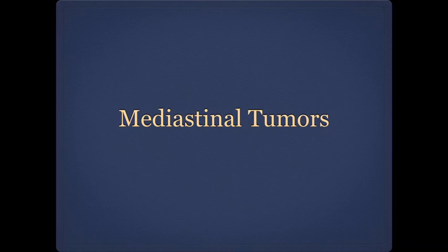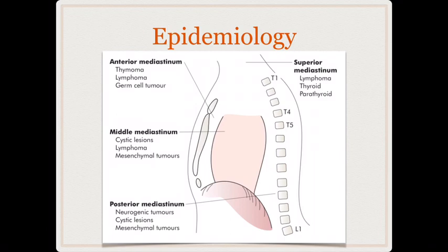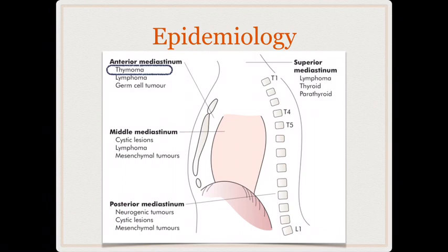Next we move on to mediastinal tumors, which are fairly uncommon but have a propensity to appear in large numbers in your MCQs. Common MCQs ask which is the commonest tumor in each mediastinum. The anterior mediastinum contains mainly the thymus and lymph nodes, so the most common tumor of the anterior mediastinum is a thymoma. Whenever you find thymoma, look for myasthenia gravis in those patients, and vice versa.